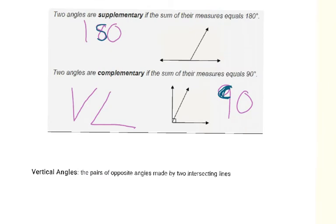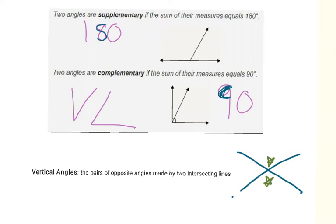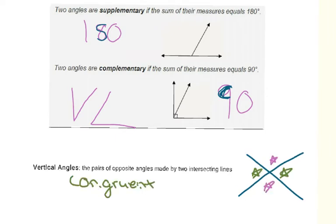We also have vertical angles. These are the pairs of opposite angles made by two intersecting lines — the ones that are across from each other. There are two pairs of vertical angles at an intersection, and vertical angles are always congruent, meaning they are the exact same size.